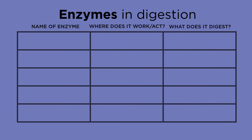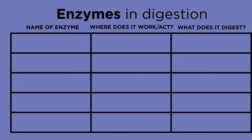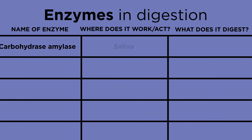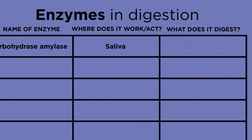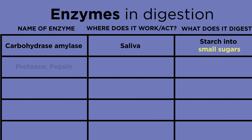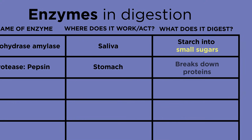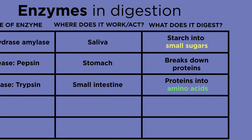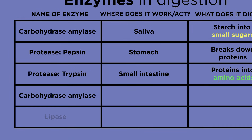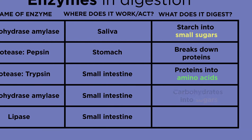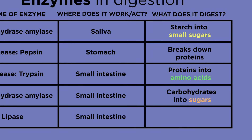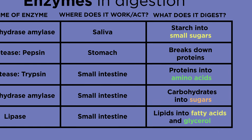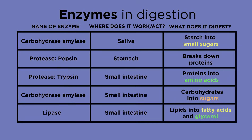To recap the main enzymes involved in digestion: a carbohydrase called amylase is released in the saliva and digests starch into smaller sugars. A protease called pepsin digests protein in the stomach. Then a protease called trypsin further digests proteins into amino acids in the small intestine. Amylase and lipase are also released into the small intestine from the pancreas, digesting carbohydrates into sugars and lipids into fatty acids and glycerol. These molecules are small enough to be absorbed into the blood.